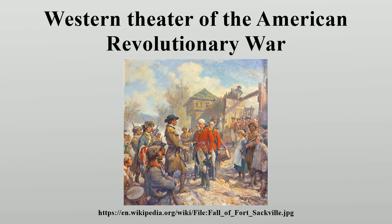Nevertheless, Shawnees and Delawares became increasingly divided over whether or not to take part in the war. While leaders such as White Eyes and Cornstalk urged neutrality, Buckongahelas and Blue Jacket decided to fight against the Americans. In Kentucky, isolated settlers and hunters became frequent targets of attacks, compelling many to return to the east. By late spring of 1776, fewer than 200 colonists remained in Kentucky, primarily at the fortified settlements of Boonesboro, Harrodsburg, and Logan's Station. In December 1776, Pluggy was killed in an attack on McClellan's Station, located on the site of present Georgetown, Kentucky.